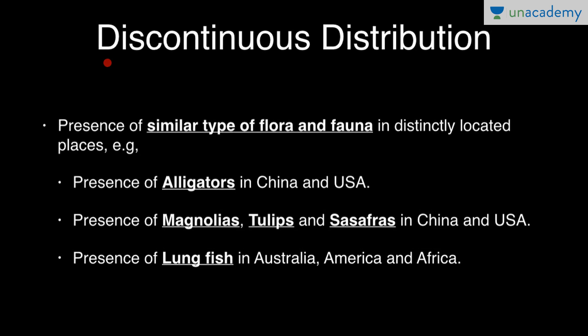Discontinuous distribution refers to the presence of similar types of flora and fauna in distinctly located places, with no similarity of flora and fauna in the intervening zone. The two distinctly located areas share similar flora and fauna, but the zone separating them does not.